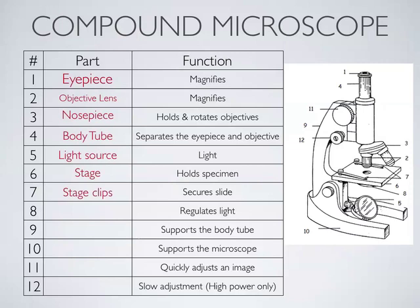Below the stage, there's a dial with different sized holes. As you turn it, it changes the amount of light coming through: a small hole gives less light, making the image darker; a bigger hole allows more light. It's called the diaphragm. The part you hold onto when carrying the microscope — the part that supports it all — is called the arm. The bottom is the base.